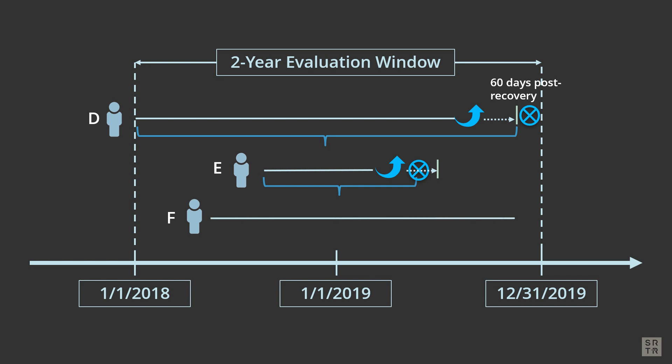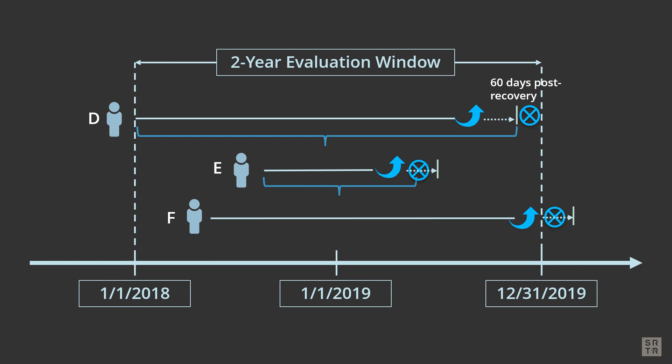Patient F was on the list at the beginning of the observation period and removed for recovery before the end of the period, but the 60-day follow-up extended past the cutoff for the observation period. Patient F died after the observation period but within the 60-day follow-up. Patient F's person time is counted from listing to the end of the period, and Patient F's death is not counted in this observation period but will be counted in the next.